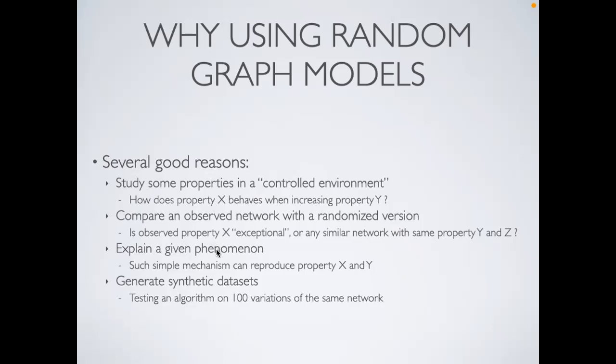Random networks can also be used to explain a given phenomenon — for instance, if you observe that the diffusion of a virus in a population has some waves, is this something completely normal in any random network, or do I need to generate a random network with some specific properties to have this emerge naturally? And they are used to generate synthetic datasets: if you launch a diffusion on a network and want to see if you always get the same results or how parameters affect it, you need to test the same experiment on 100 variations.